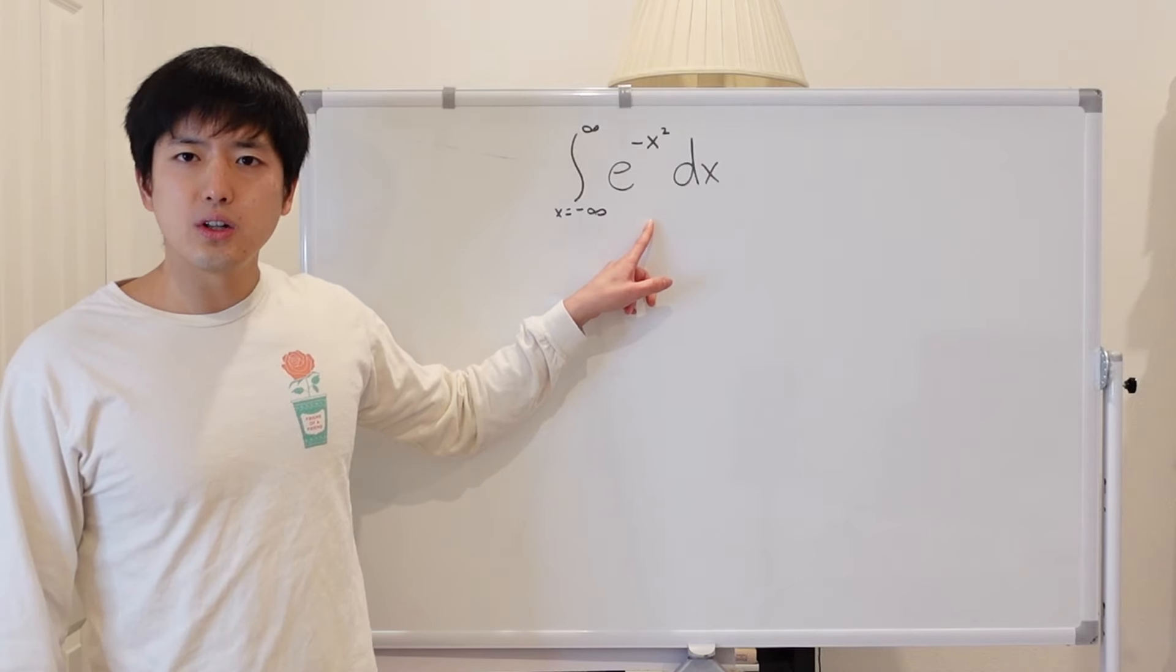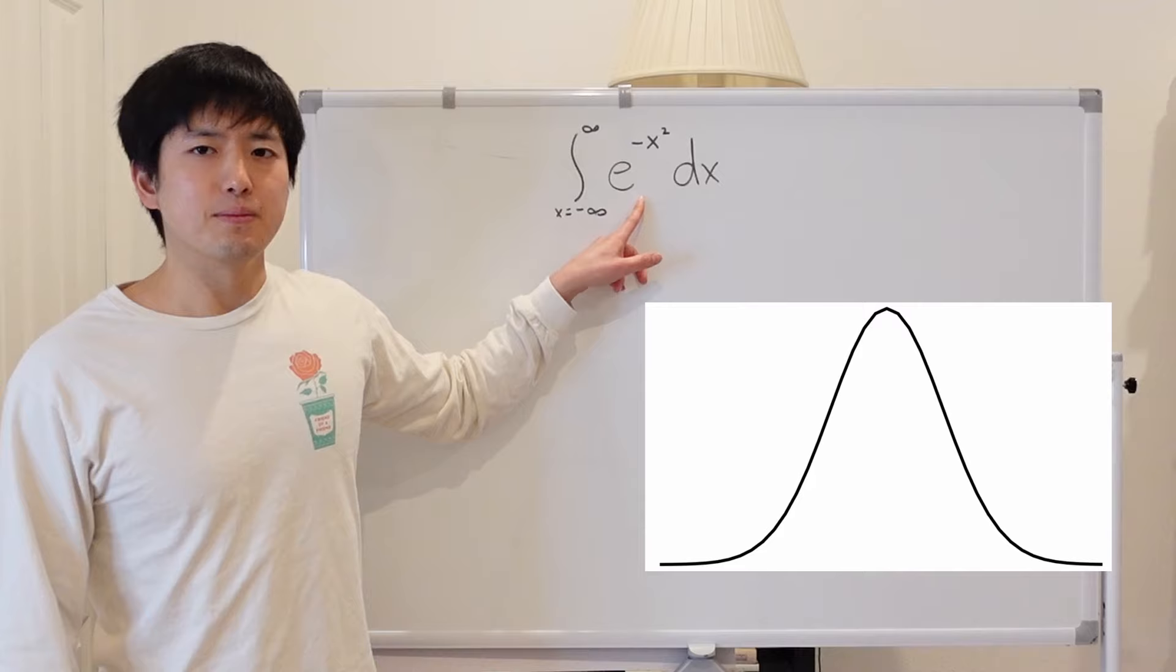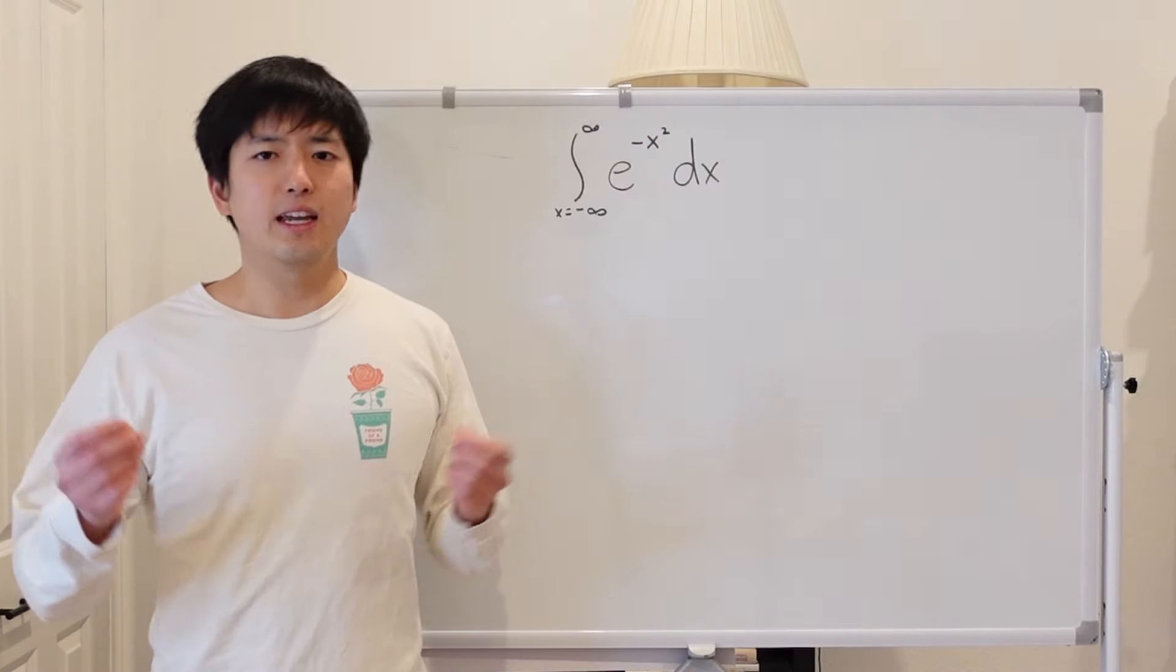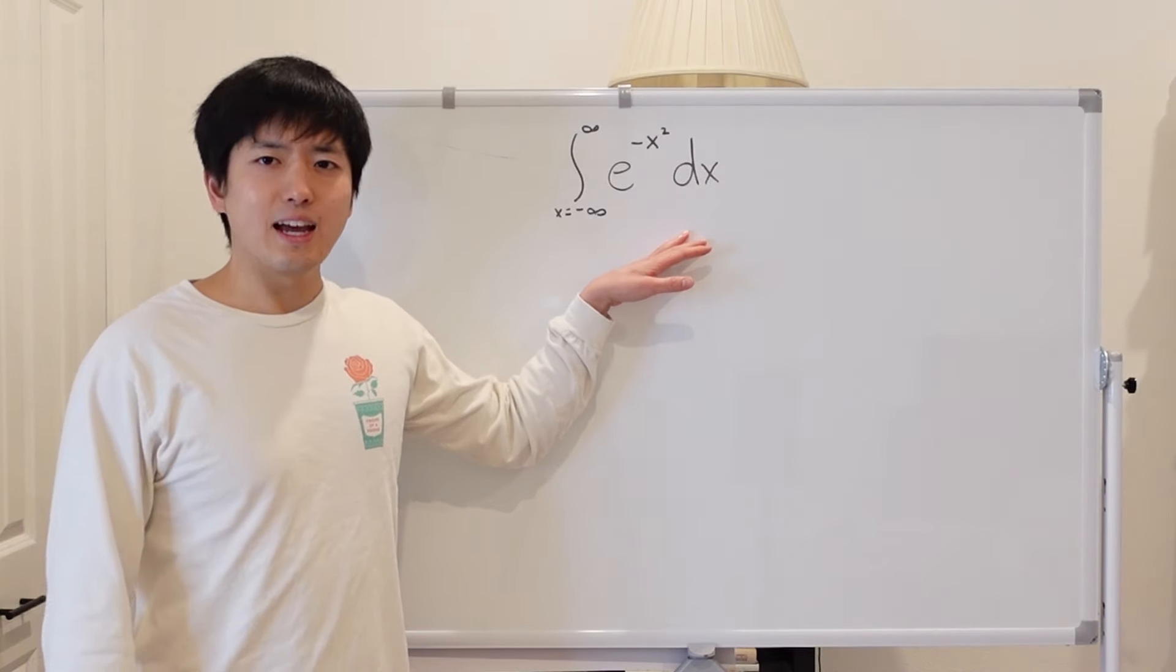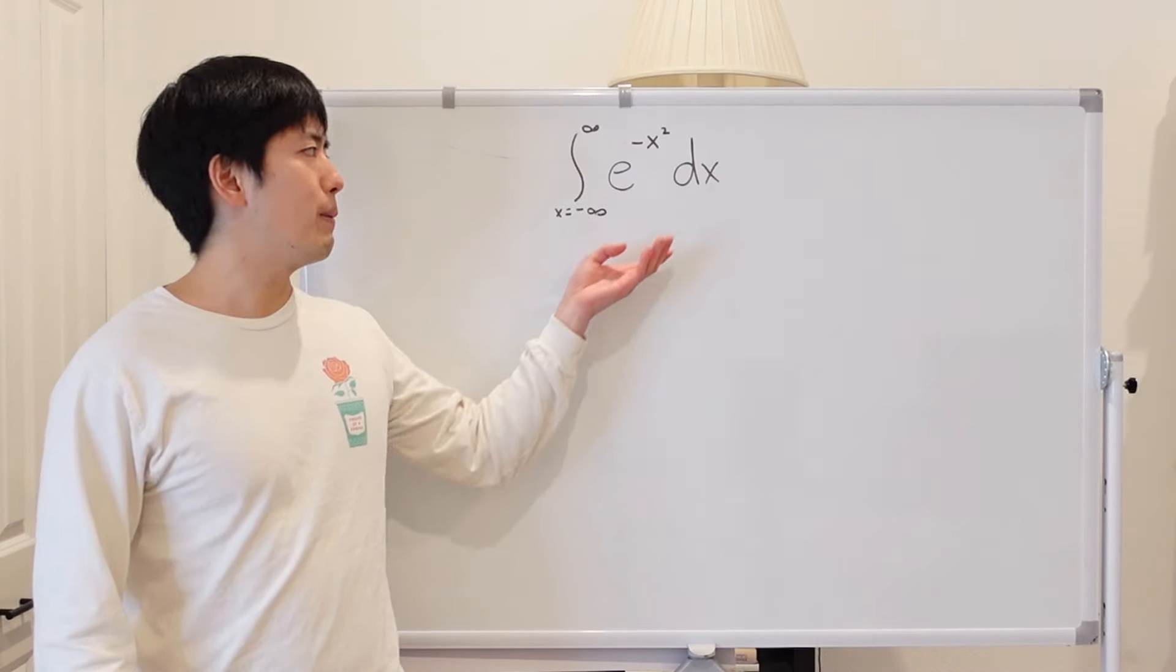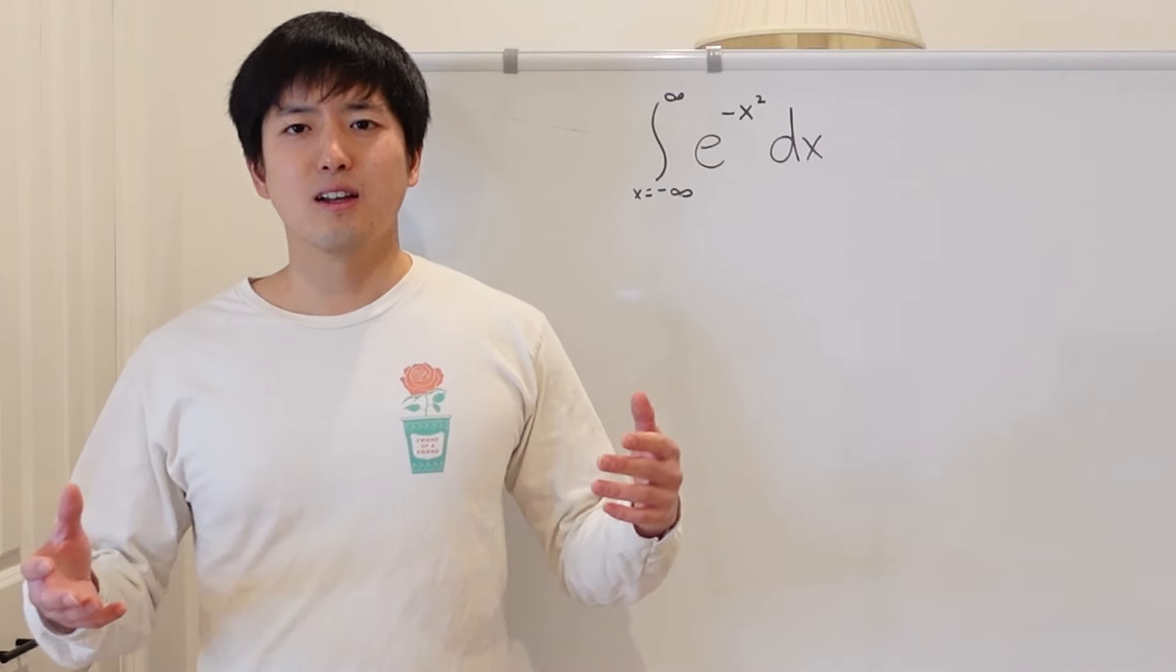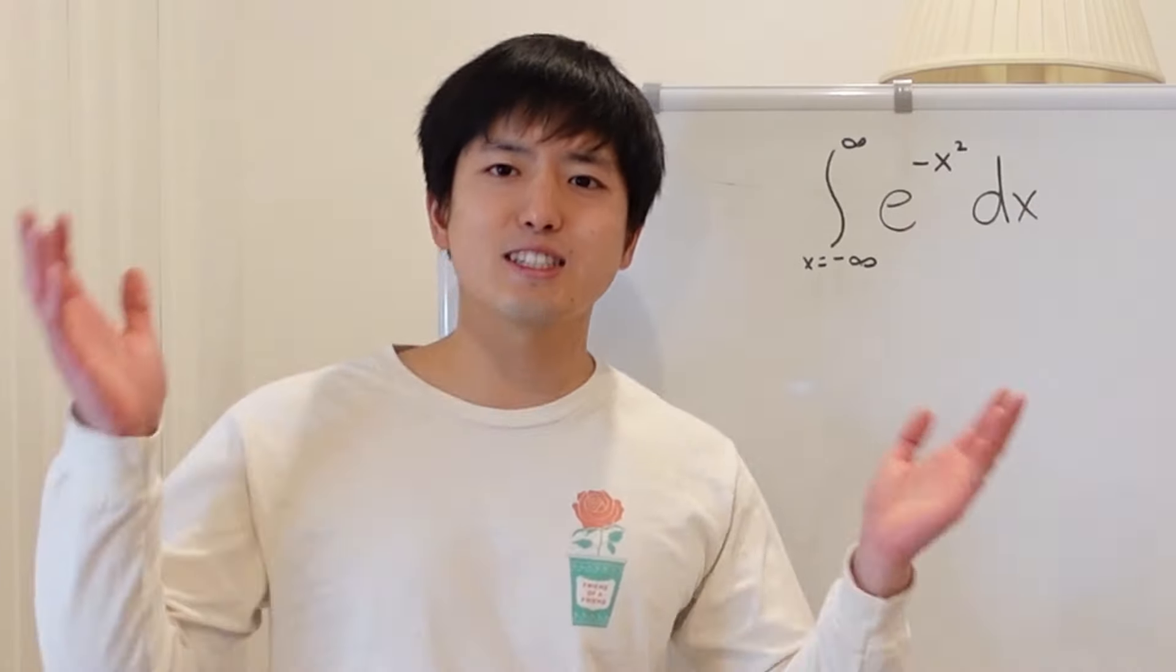This is known as a Gaussian integral, and the expression inside e to the negative x squared is a Gaussian. You can expect to encounter the Gaussian function in many fields, such as signal processing. You can expect to see this integral in quantum mechanics, and so it would do you well to know how to go about approaching this integral. In this video, I want to cover the fancy trick that you can use to solve this. So let's get started. It won't take long.